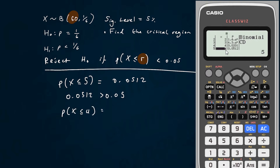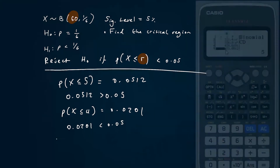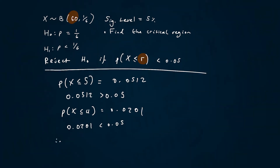0.0512 is bigger than 0.05, so that's not what we want. The probability of getting less than or equal to 4 is 0.0201, and 0.0201 is less than 0.05. Therefore the critical region is X less than or equal to 4.